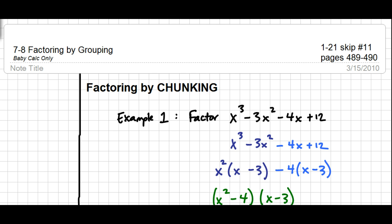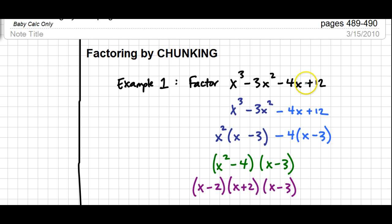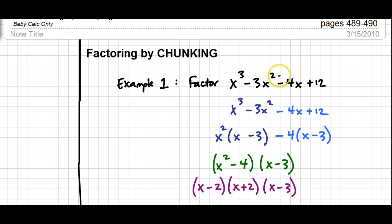Chunking is not an official mathematical term — it's just a word that's easily applied to this type of factoring. When you see a polynomial that has more than three terms, grouping should be one of the options you think about. You want to essentially cut that polynomial in half and see if there are GCFs for the first two terms and for the last two terms.